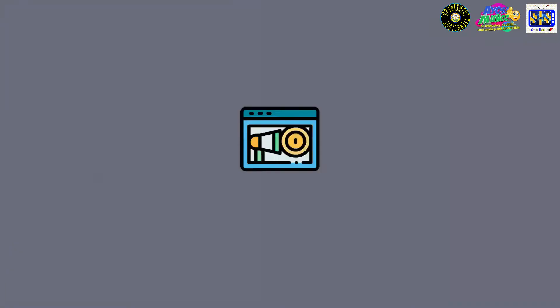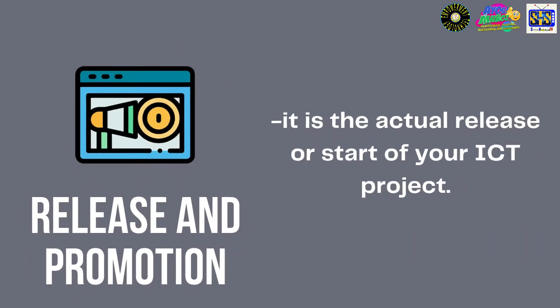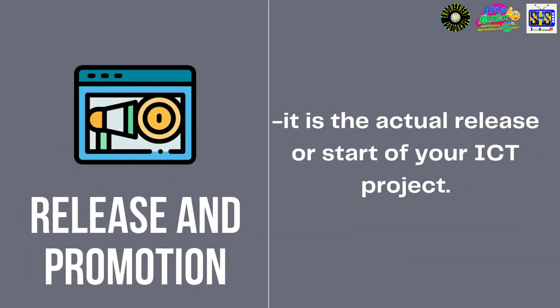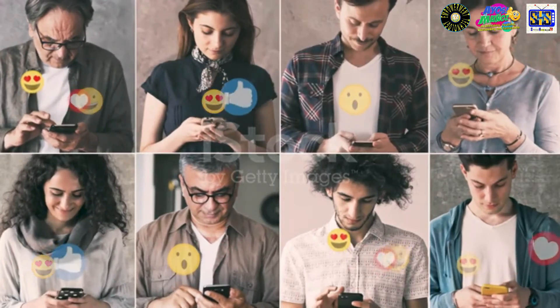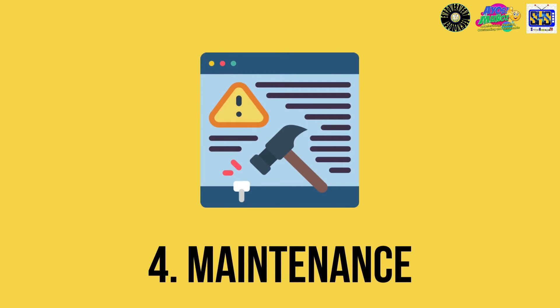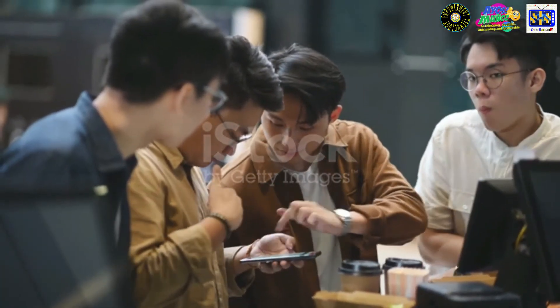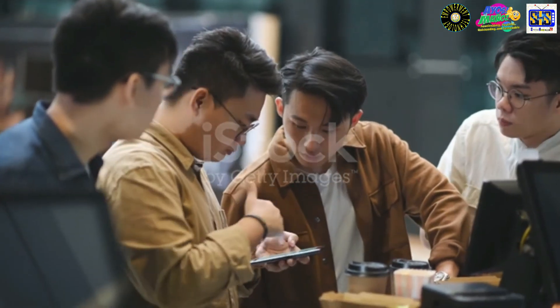The third step is release and promotion. From the words themselves, it is the actual release or start of your ICT project — sharing your page or website with the public and promoting it through different social media websites. And of course, the last step: maintenance. After the release of your ICT project, it should not just end there. You need to continue monitoring your pages and websites, gather everyone's opinions, and update your contents to make more people support your project.